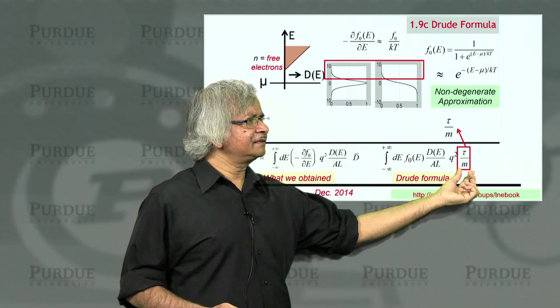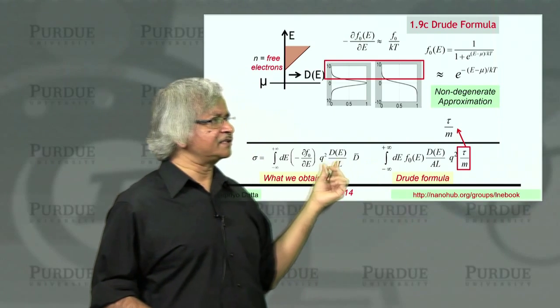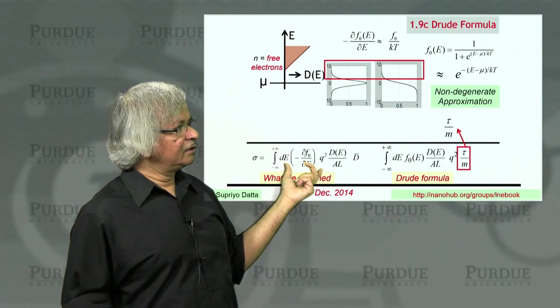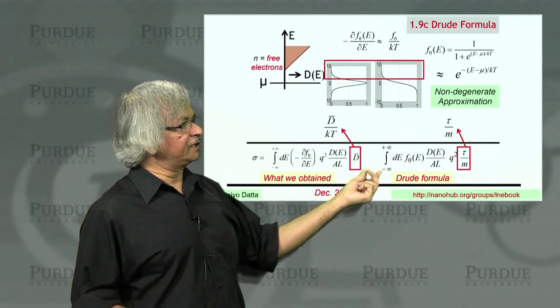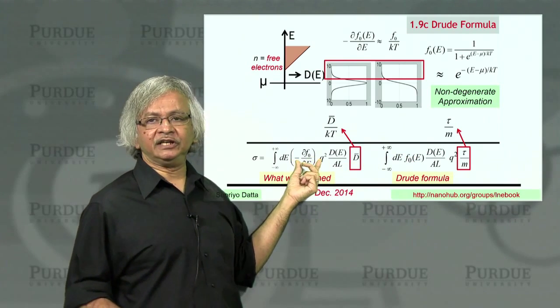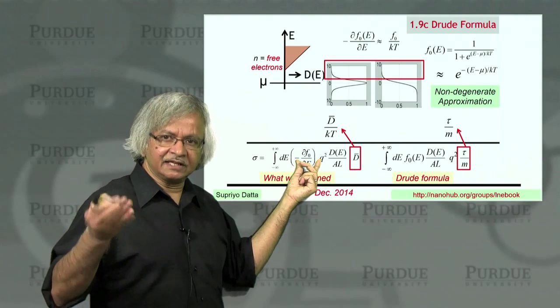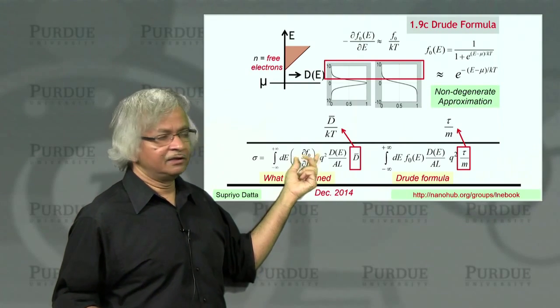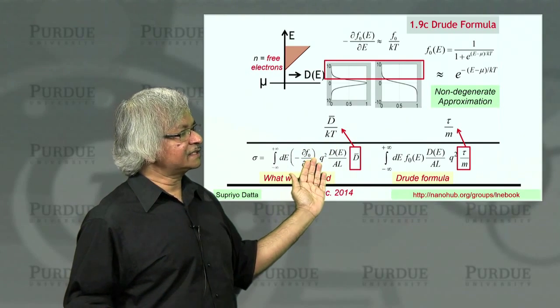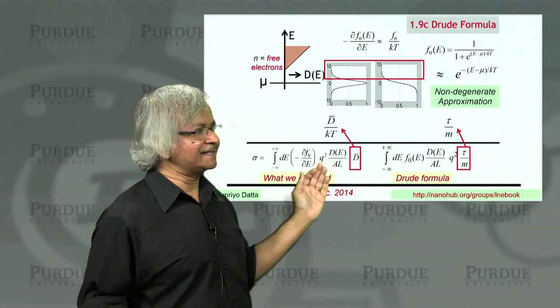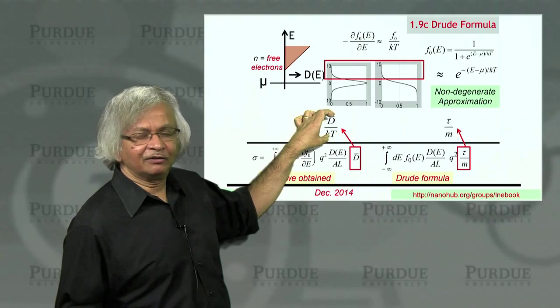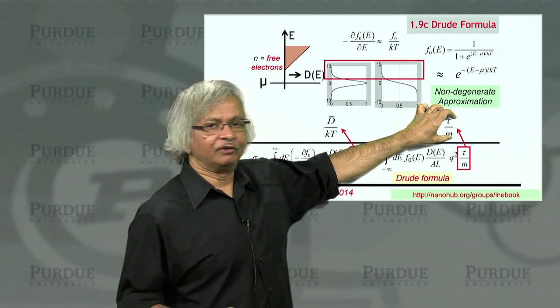So if you look here, you see that this term, the tau over m, that doesn't appear anywhere here. So let's pull that out. Now when you look here, the term that's different is this d bar. And also, instead of f, we have df, dE. But then the df, dE is like f divided by kT, which is why I've divided by kT. So you could say that this expression and that expression are essentially the same except for a factor of d bar over kT over here and a factor of tau over m over there. Now let's multiply both by q.